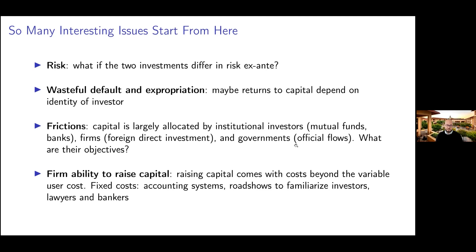These various players might have different objectives from the simple abstract aggregate neoclassical model. Similarly for firms, it's one thing to say we have one cost of capital, we all borrow at the same rate, and the supply of capital is infinitely elastic at that rate — versus the reality. As soon as you look at the micro data, you find that there are variable costs in raising capital but also fixed costs. You need accounting systems, you need to reach out to investors and make them aware of who you are as a firm, you need lawyers, you need bankers — all of these can have a very large fixed cost that might prevent a smaller firm from accessing capital.